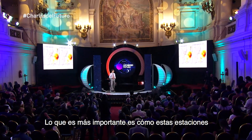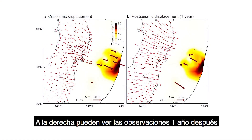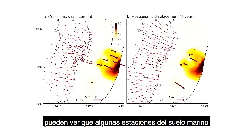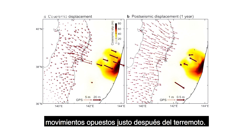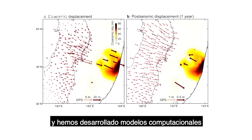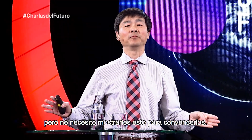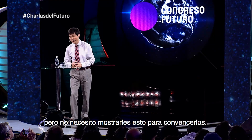However, this is not the whole story. More importantly, a year after the earthquake, some of the seafloor stations actually moved backward—we do see opposing motion right after the earthquake offshore. So the theory is quite complete. We have developed computer models and the whole process can be simulated.